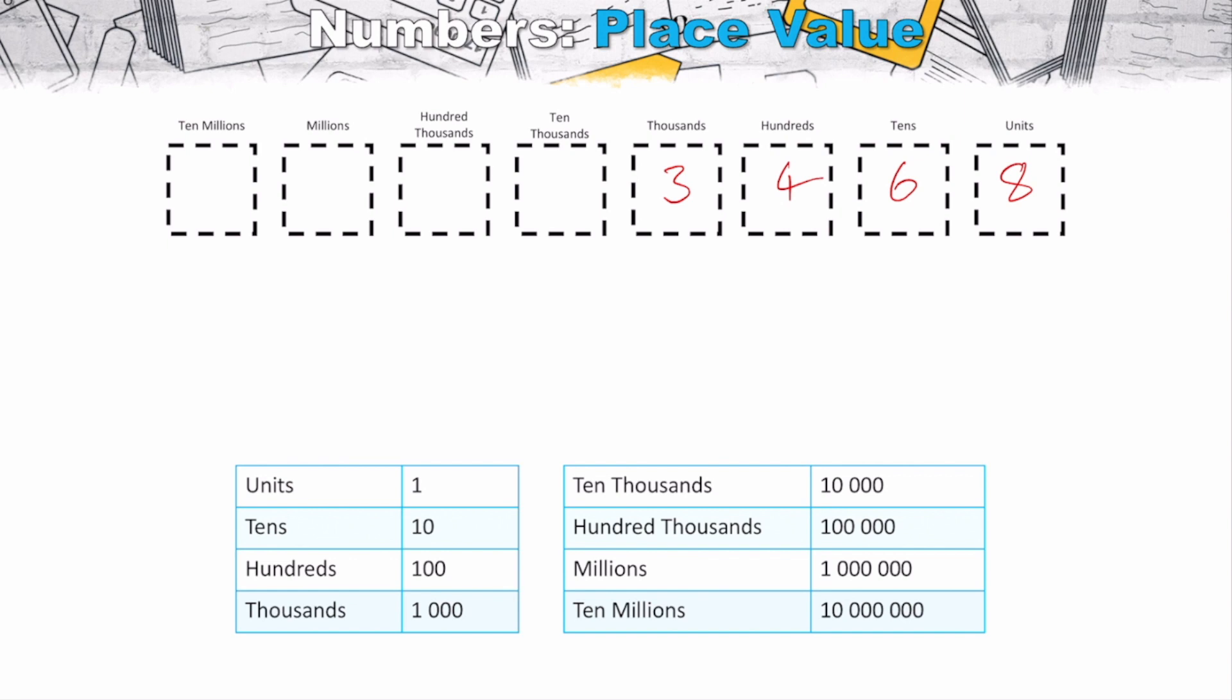We can think about this like breaking it into its different parts. Starting with the three here, this three represents how many thousands or lots of thousands that we would have. So in this case, we have three lots of our thousands, which we can write as 3,000 or we can go three times 1,000, for example.